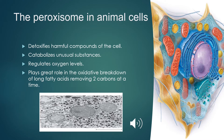The peroxisome is different in animal and plant cells. In animal cells it plays many roles: the peroxisome detoxifies harmful compounds of the cell and catabolizes unusual substances. It is speculated that it might also regulate the levels of oxygen in the cell. The peroxisome is also important in the oxidative breakdown of fatty acids found in triglycerols, phospholipids and glycolipids.